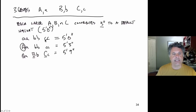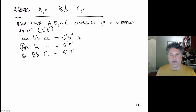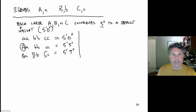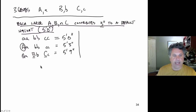The small alleles aren't necessarily recessive; they just lead to a default state — they don't contribute to additional height above the default. Now let's look at what would happen if a triple heterozygote mated with another triple heterozygote.